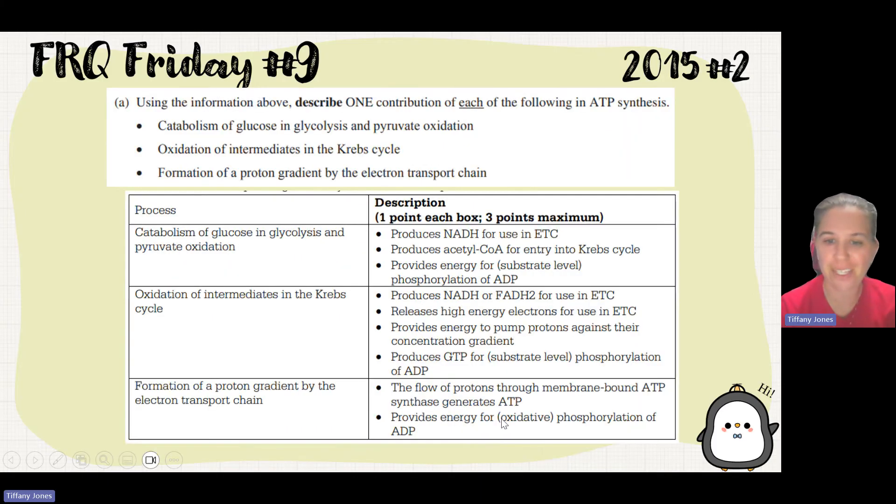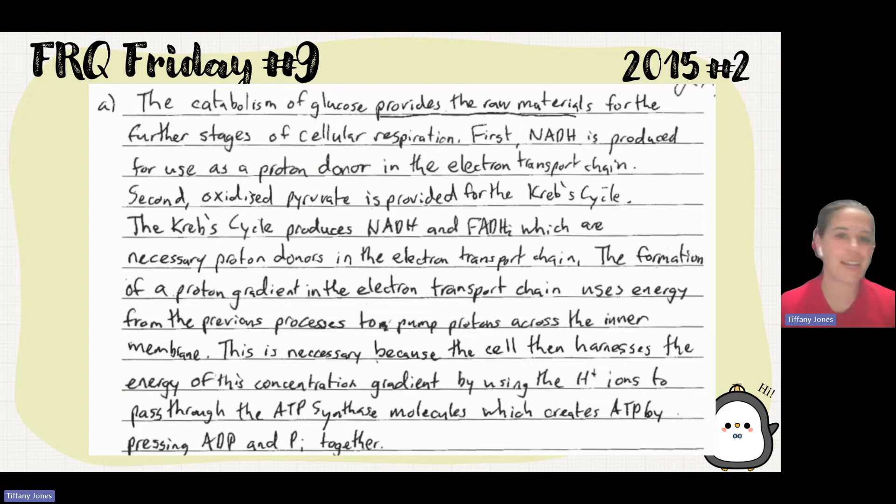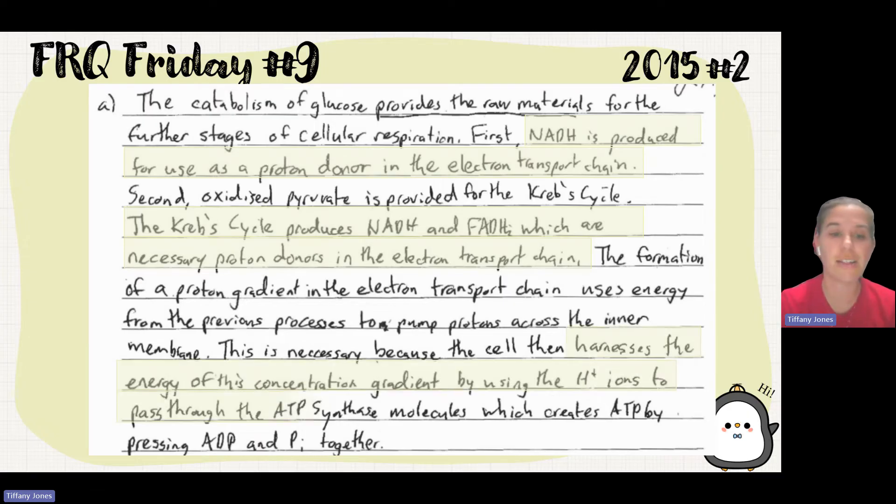If we look at the scoring guidelines for that, we see, of course, flow of protons through the membrane-bound ATP synthase generates ATP or provides energy for oxidative phosphorylation of ATP. The student goes on to talk about catabolism, glucose provides raw materials for further stages of cellular respiration. First, NADH is produced and used as a proton donor in the electron transport chain. Second, oxidized pyruvate is provided for the Krebs cycle. The Krebs cycle produces NADH and FADH2, which are necessary proton donors in electron transport chain. The formation of a proton gradient in the electron transport chain uses energy from the previous process to pump protons across the inner membrane. This is necessary because the cell then harnesses the energy of this concentration gradient by using the protons to pass through the ATP synthase, which creates ATP. So very quick and to the point, they use the diagram to explain everything.